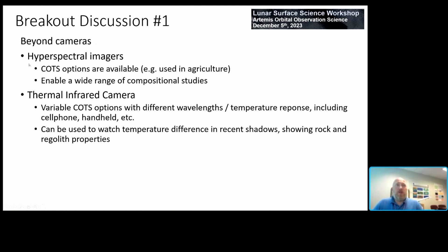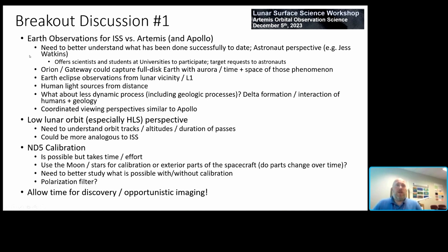In one breakout there was discussion of advantages from hyperspectral imagers, limiting discussion to commercial off-the-shelf options. Hyperspectral imagers used for agriculture could be enabling for a wide range of compositional studies. Similarly, thermal cameras — including cell phone and handheld versions — could be used to look at how regolith and rock temperatures respond going into shadow. For Earth vicinity observations, there's a lot of comparison to ISS and even Apollo that could be better explored, but a better understanding of what's been done to date is needed. Orion and Gateway can capture the full disk Earth with aurora, offering time and space phenomena studies.